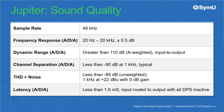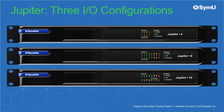As with all other Symmetrix digital signal processors and audio accessories, state-of-the-art sound quality is expected and delivered. The Jupyter DSP is available in three different I/O configurations, each differing only in the number of inputs and outputs available.